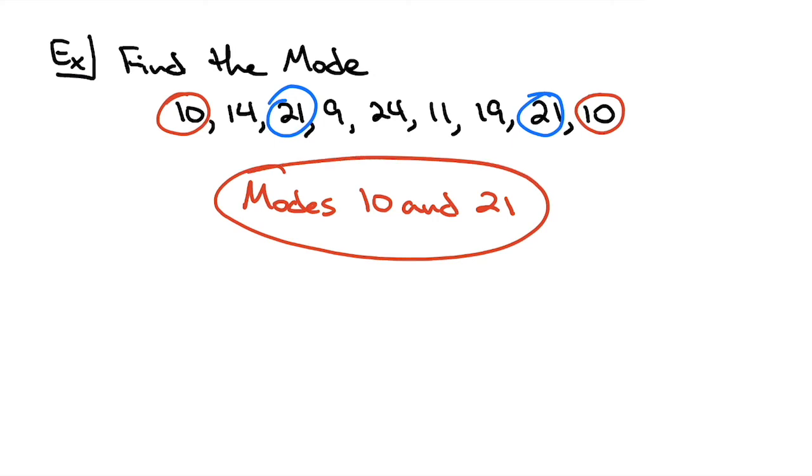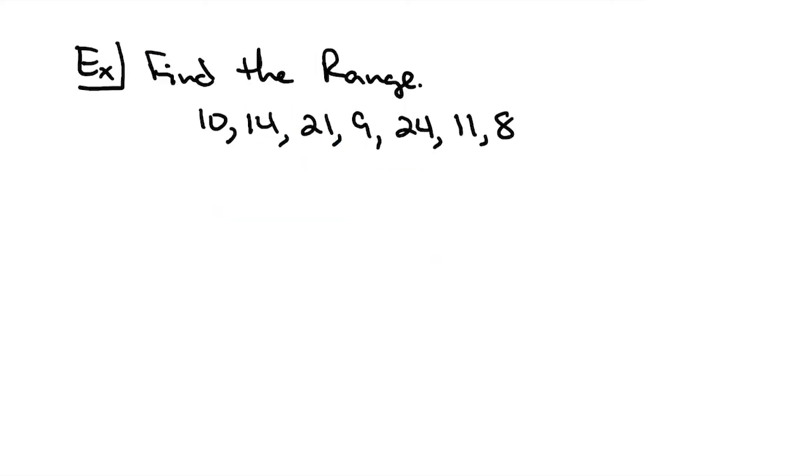And then for our last example here, we are looking at the range. So for the range, you just need to take the largest number in the list minus the smallest number in the list. The 24 is the biggest number in the list. The 8 is the smallest number in the list. So it's a matter of just going 24 minus 8, and that's going to give you a 16. So our range is 16.